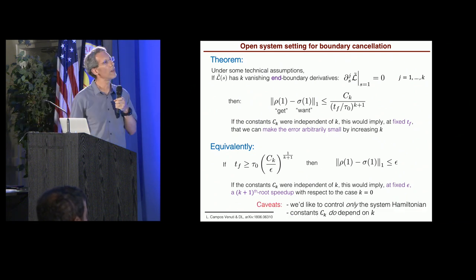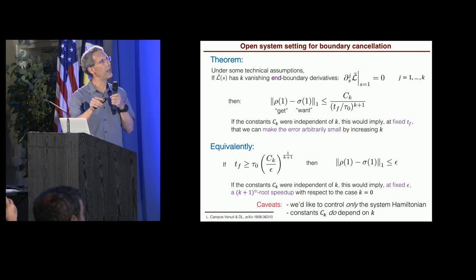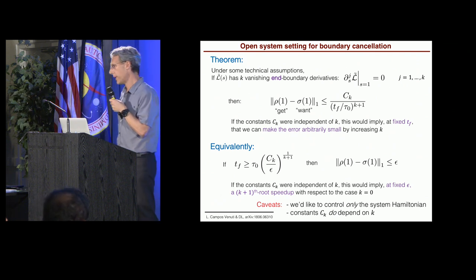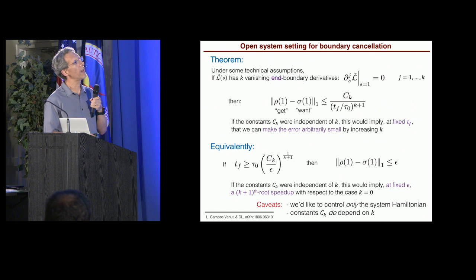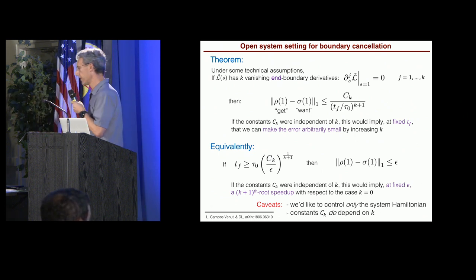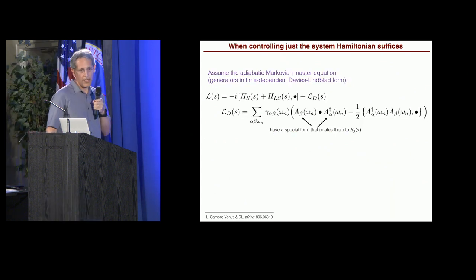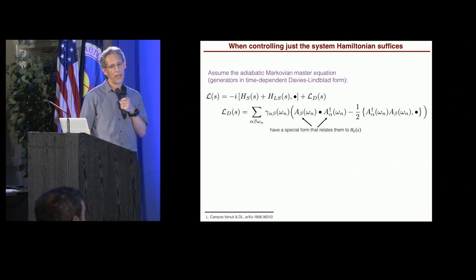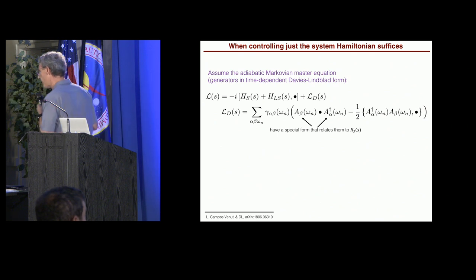Now, there are two caveats. One is if you look at this carefully, you see that I'm talking about controlling a Liouvillian. All right? I'm asking you to set the boundary derivatives of a Liouvillian to 0. But that includes conditions on the bath, and that doesn't seem reasonable. I should not have, I should not be able to control the bath. And secondly, these constants, they do depend on K. All right? So we have to address both of these things.